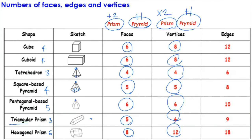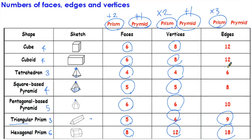Now for edges. A cube has a four-sided base and twelve edges. A cuboid also has twelve edges. A triangular prism has a three-sided base and nine edges. A hexagonal prism has a six-sided base and eighteen edges. The pattern: for prisms, the number of edges is always three times the number of sides of the base. For pyramids: a triangular base gives six edges, a four-sided base gives eight edges, and a pentagonal base gives ten edges — so for pyramids, it is double the number of sides of the base.